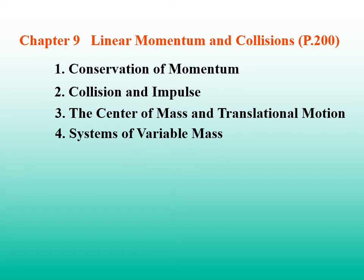We have studied chapters 1 through 8. Up to now, we mainly focused on the motion of a single object. We used a model or particle to represent the object in translational motion. But in the real world, an object is not a theoretical point without spatial extension. A real object is made up of many tiny particles. So we use the knowledge we have learned to investigate systems which include two or more bodies. This is what we are going to do in chapter 9 and the following chapters.